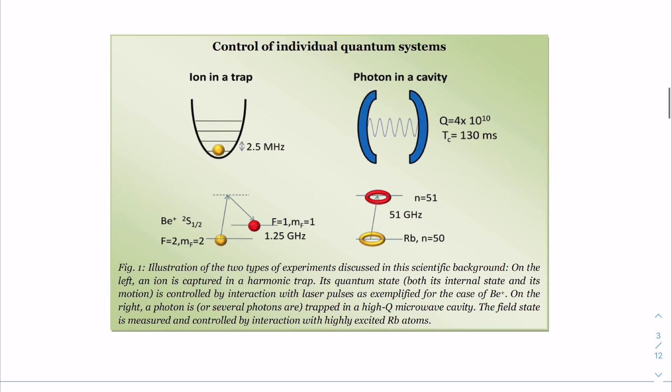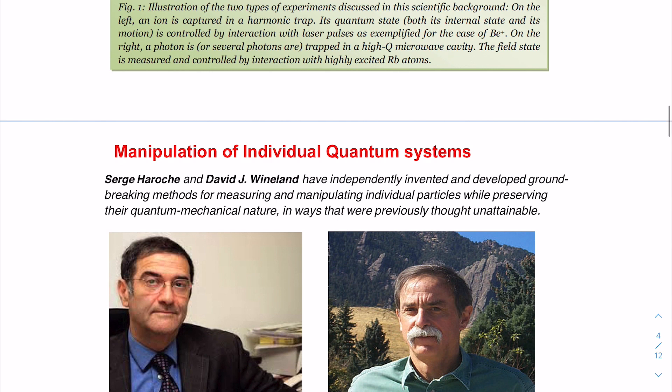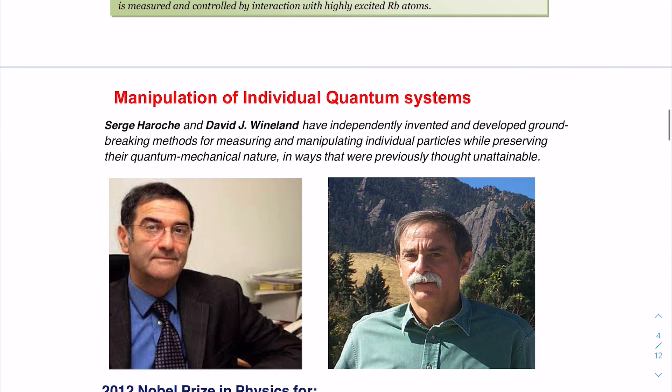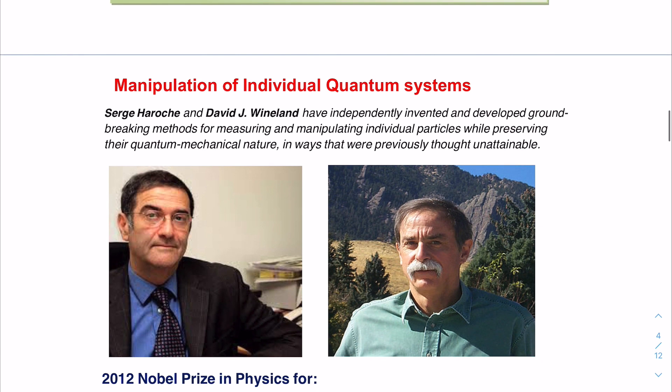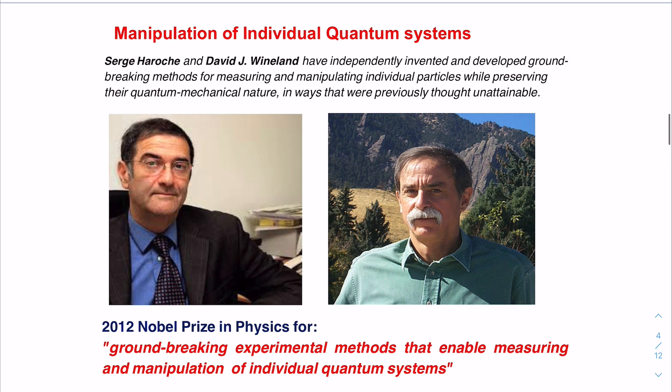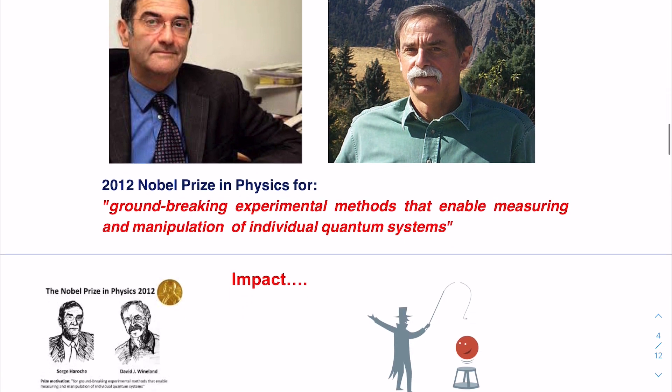Such is the impact of such research that two pioneering researchers, Sergei Haroche and David J. Wineland, were awarded 2012 Physics Nobel Prize for their groundbreaking work for manipulation of individual quantum systems. In fact, their work led to the possibility of quantum computers.